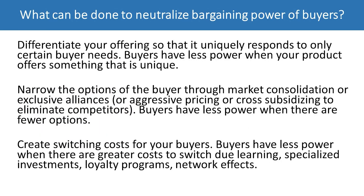What can be done to neutralize the bargaining power of buyers? Differentiate your offerings so they uniquely respond to certain buyers' needs — buyers have less power when your product offers something unique. Narrow the options of the buyer through market consolidation, exclusive alliances, or eliminating competitors — buyers have less power when there are fewer options. Finally, create switching costs for your buyers; buyers will have less power when there are great costs due to learning, specialized investments, loyalty concerns, network effects, etc.